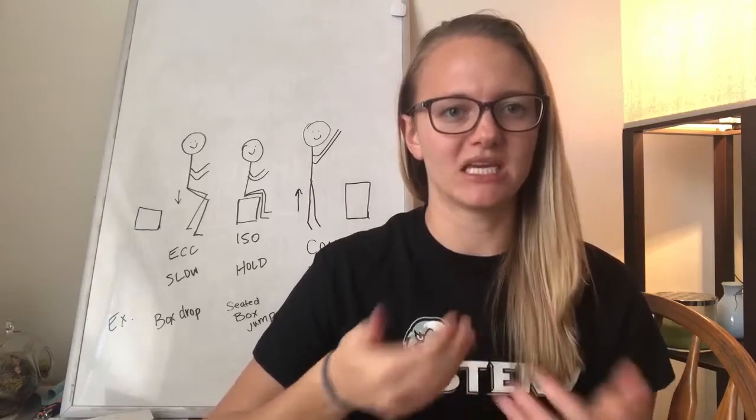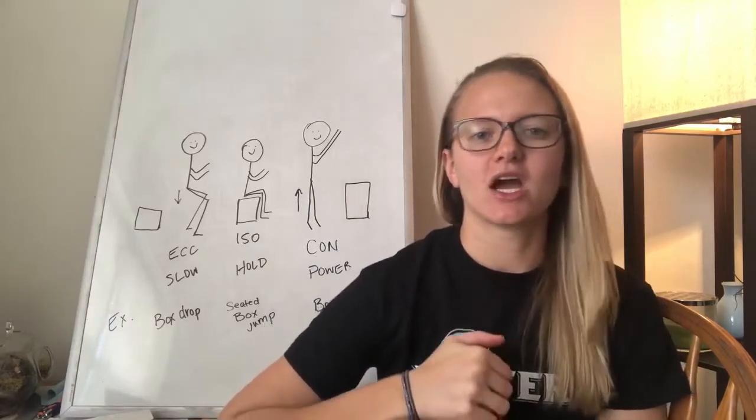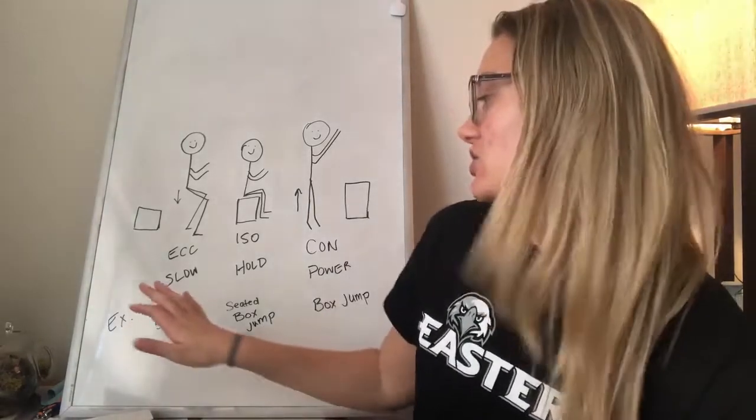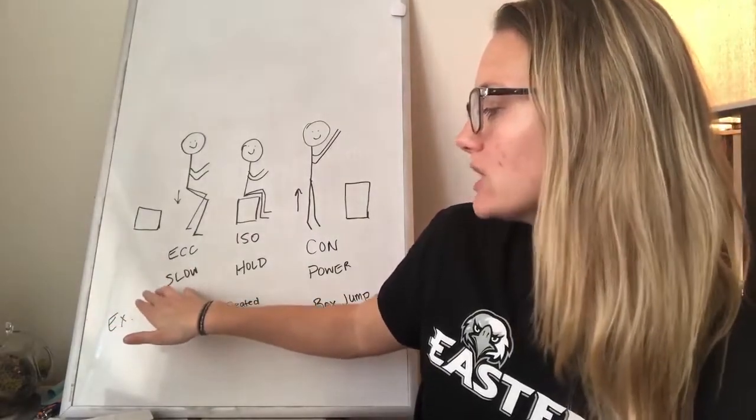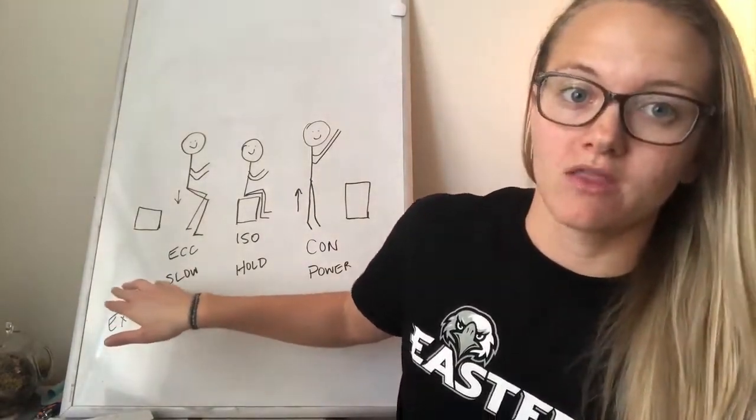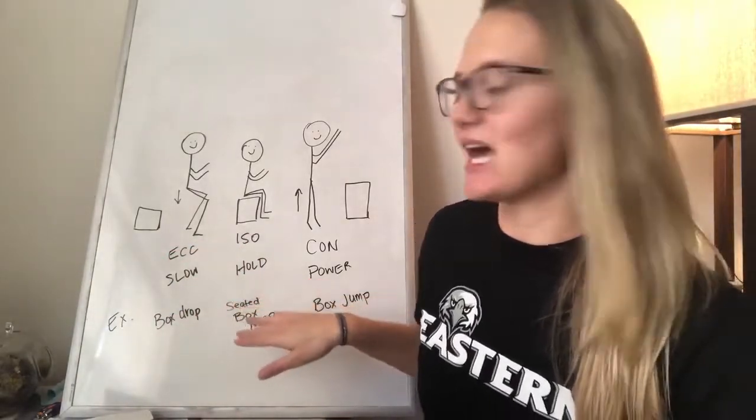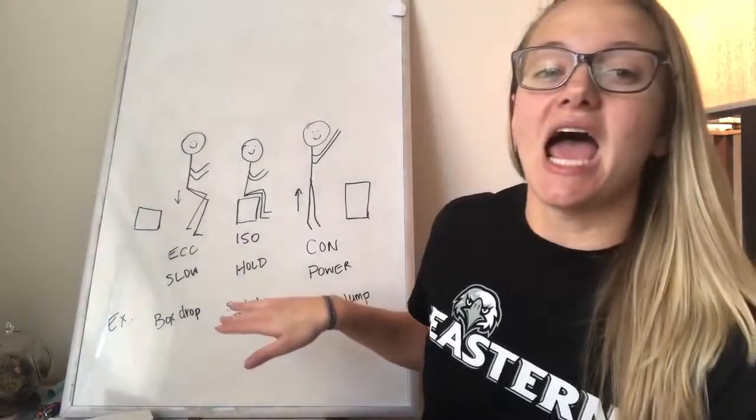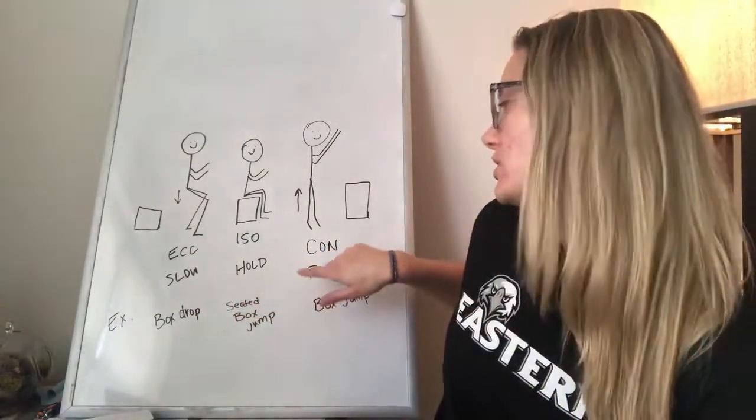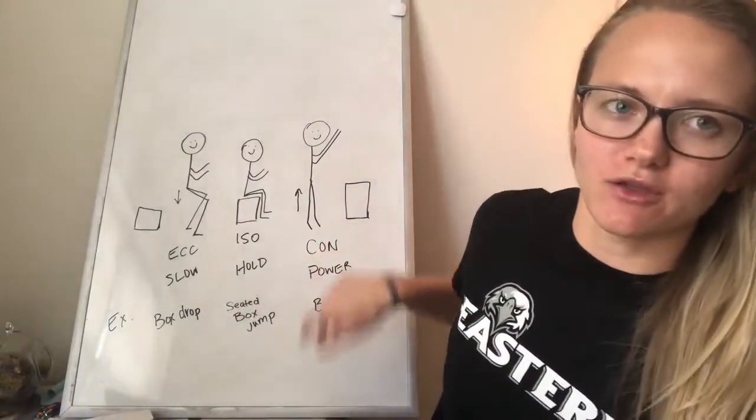There are three phases to the basics of a plyometric. So the first phase is your eccentric phase. This is your slowly lowering down. Then there's a little bit, and this is the quickest phase, is your isometric phase. That's your holding phase. And then you power up, which is your concentric phase. And that's the third phase.